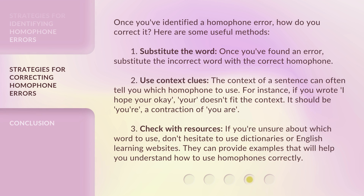Once you've identified a homophone error, how do you correct it? Here are some useful methods. First, substitute the word: once you've found an error, substitute the incorrect word with the correct homophone. Second, use context clues: the context of a sentence can often tell you which homophone to use.